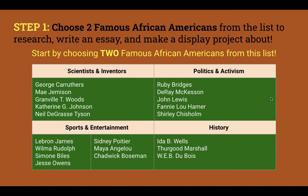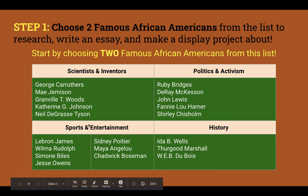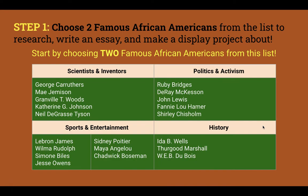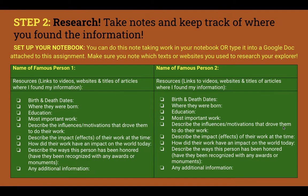Step one: choose two famous African-Americans. There are a lot of very famous people — some you know, some you might not know. Choose two that interest you. Maybe you want to do a little research on them in advance before you choose. Once you've chosen them, it's time to research. You need to make sure that you're taking notes and keeping track of where you found the information.